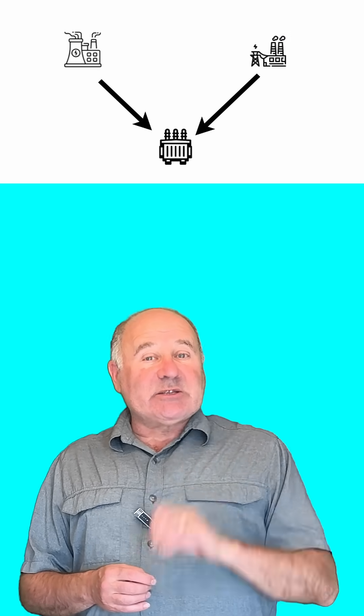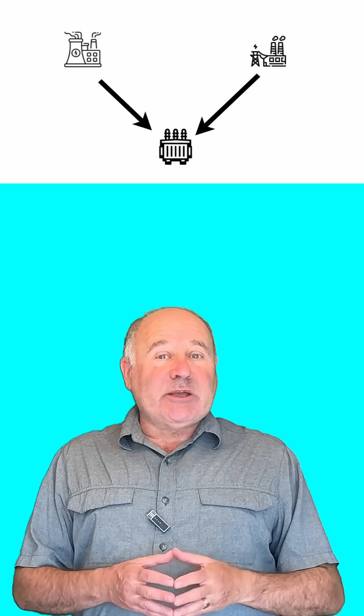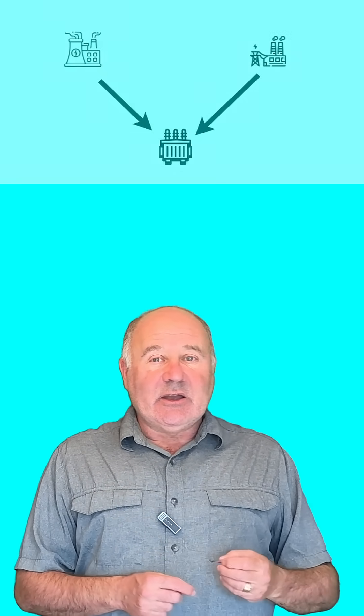In a healthy grid, the current should be flowing from generators to substations, and from there to places where the electricity is needed. There should be no current flowing from generator to generator. For that to happen, every generator at every moment has to be operating at the same voltage. If not, we'll see currents from one generator to another.